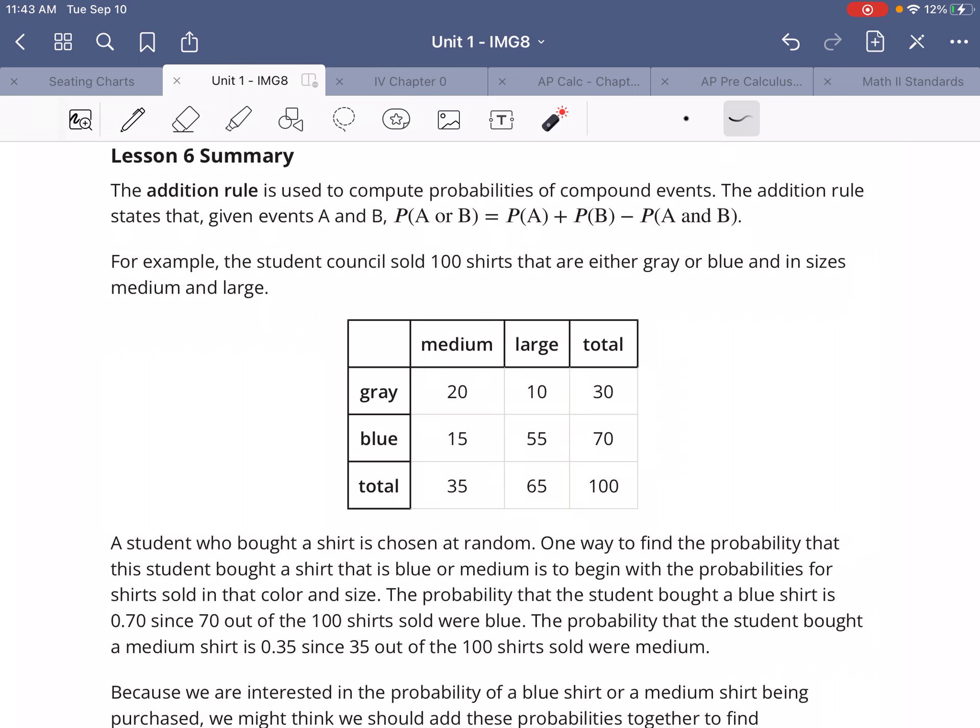One way to find the probability that the student bought a shirt that is blue or medium is to begin with the probabilities for shirts sold in that color and size. The probability that the student bought a blue shirt is 0.7. The probability that they bought a medium shirt is 0.35.